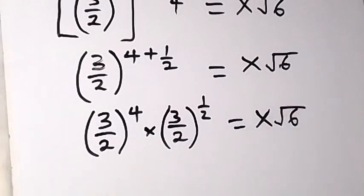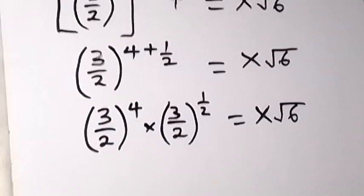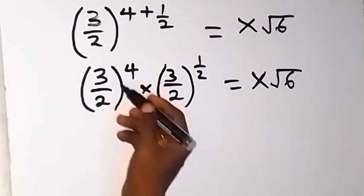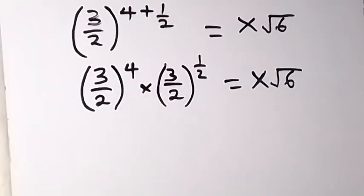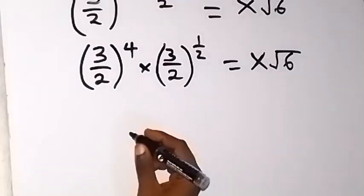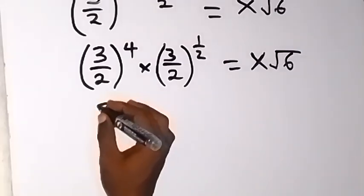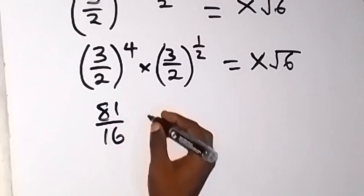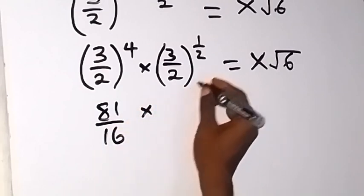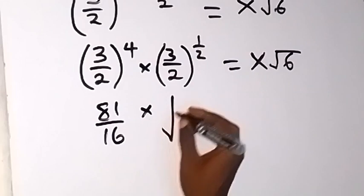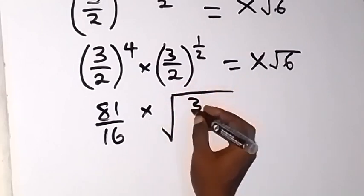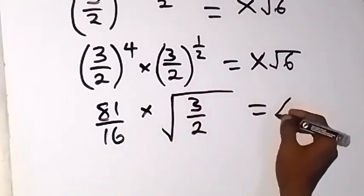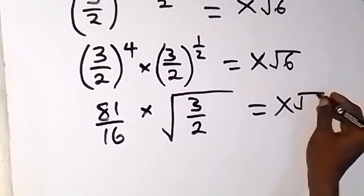Then from there, we can see that when we raise 3 to power 4 and 2 to power 4, this will give us 81 over 16. Then times, we have 3 raised to power half, which means square root. So square root of 3 over 2, then equals x root 6.